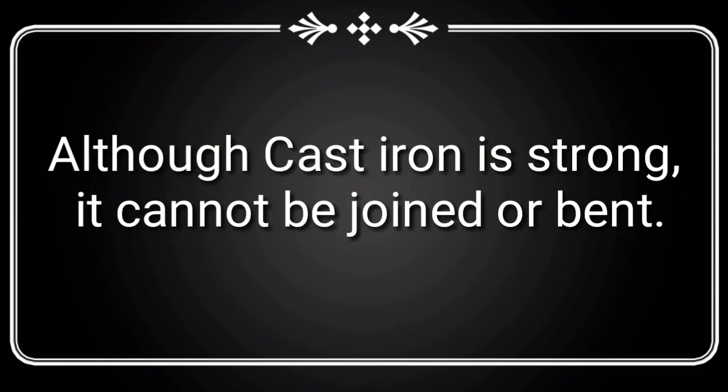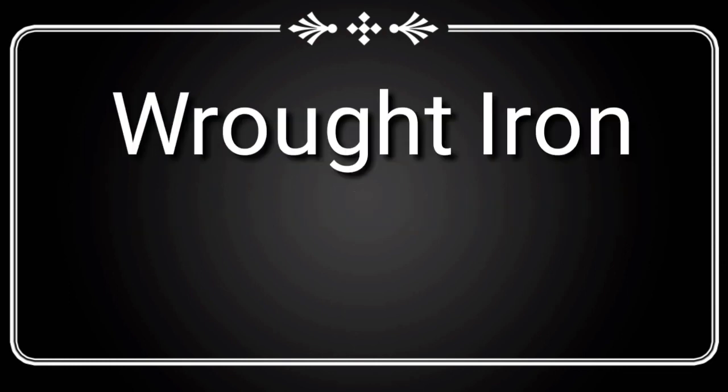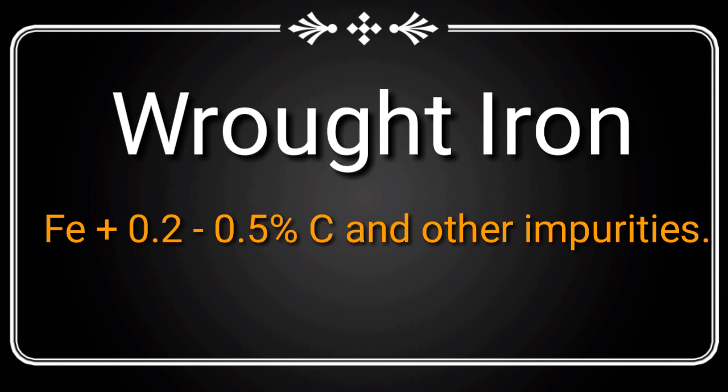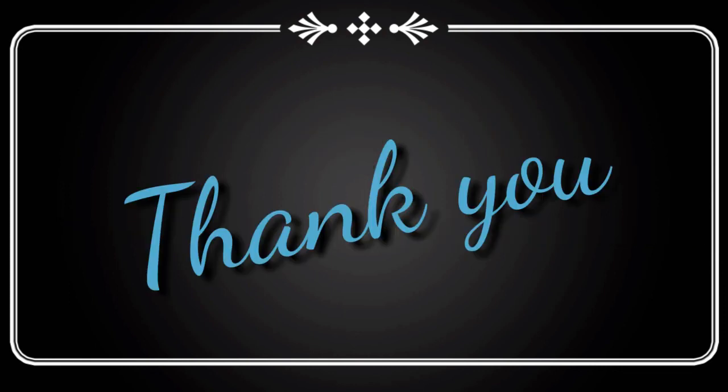Cast iron is strong but cannot be bent. The final stage is refining, which produces iron with 0.2–1.5% carbon, phosphorus, silicon, and iron. This concludes the video — thank you.